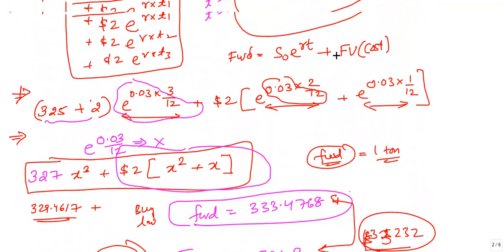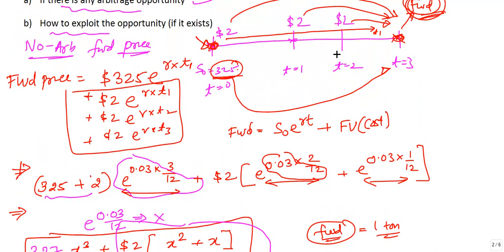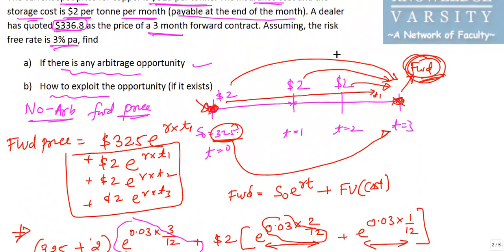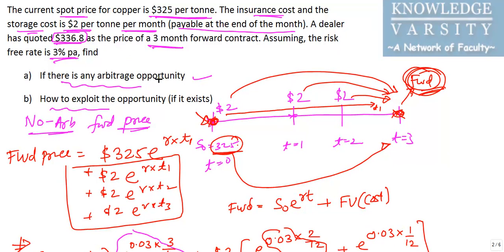So here what we have learned is the trick for computing the forward price efficiently, how to determine if there is any arbitrage opportunity, and how to exploit that arbitrage opportunity using a cash-and-carry strategy.